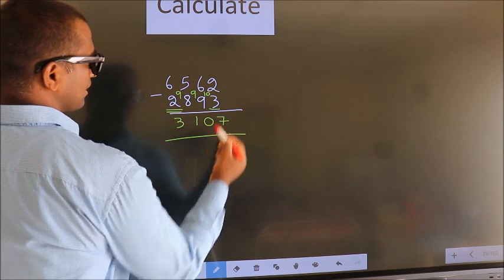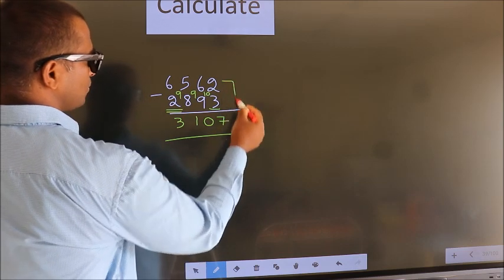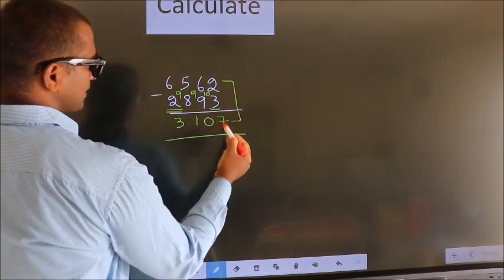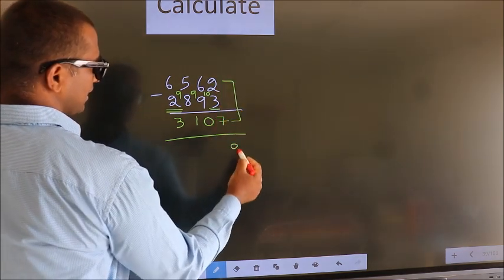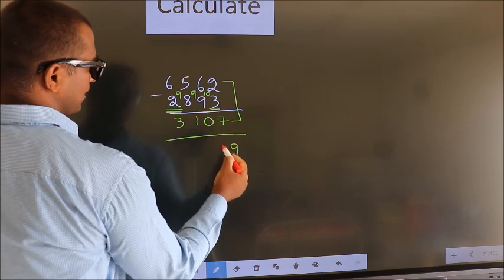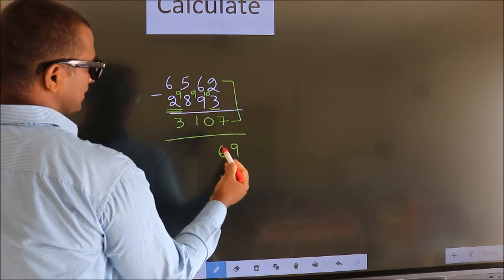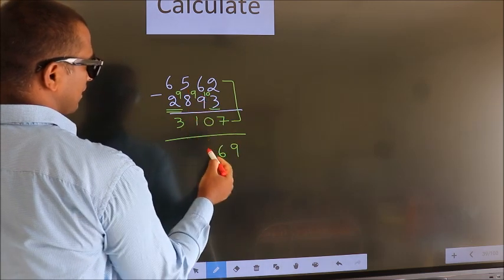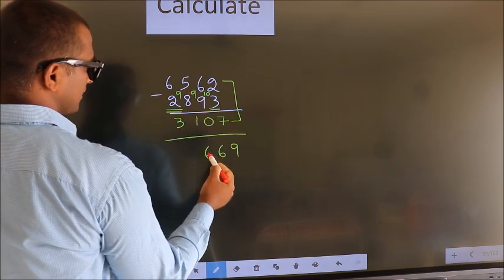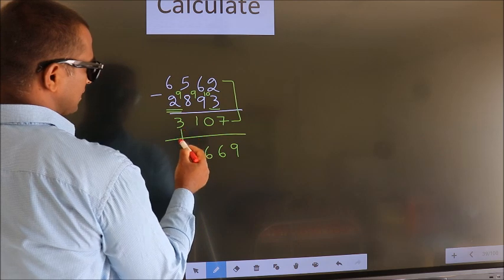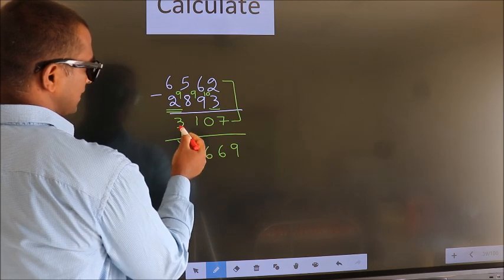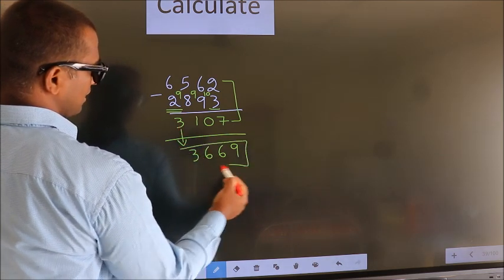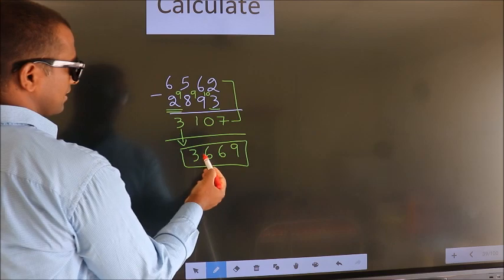Now add these two parts. 2 plus 7 is 9. 6 plus 0 is 6. 5 plus 1 is 6. The first digit you write as it is. So this is our answer.